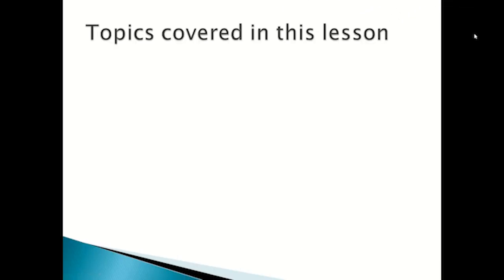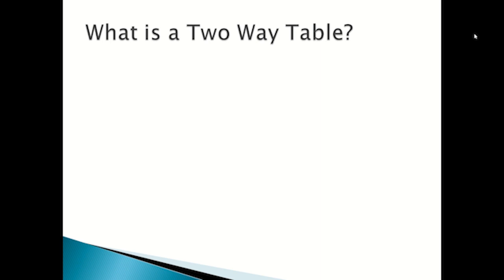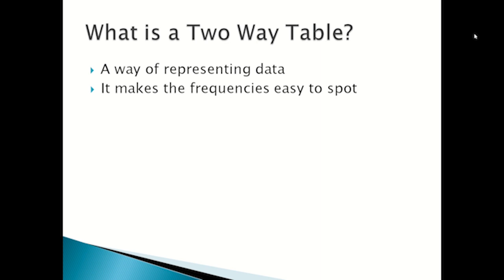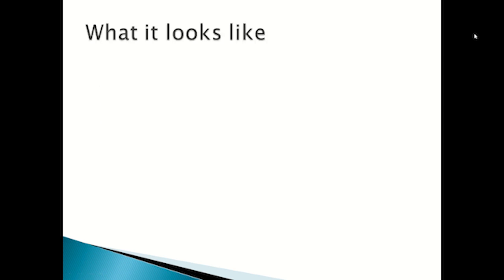Hello everyone, today we'll be looking at two-way tables. In this video we'll be looking at what a two-way table is, what they look like, example questions, and exam questions. A two-way table is a way of representing data — it makes the frequencies easy to spot. It usually covers two variables: the rows show one category and the columns show the other category.